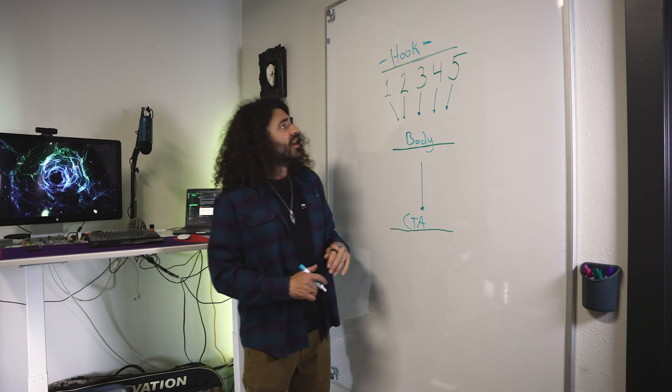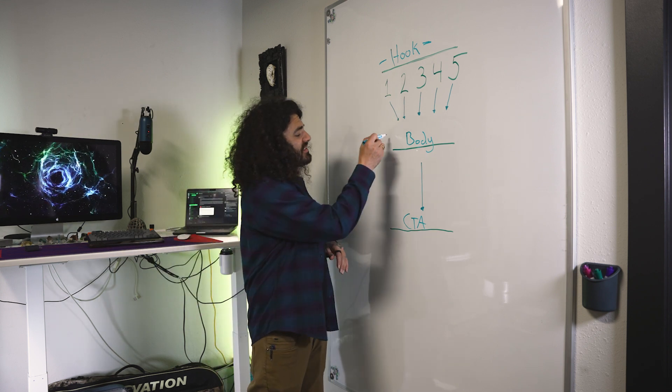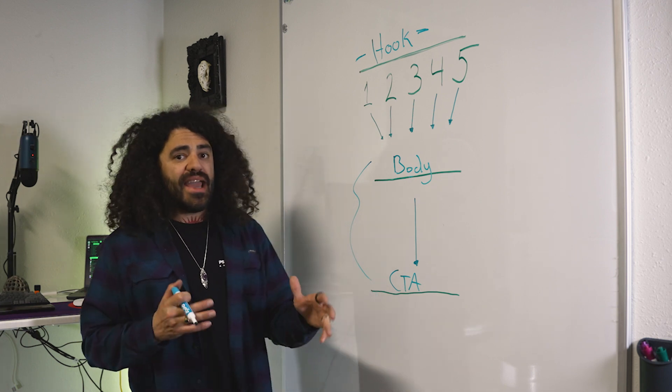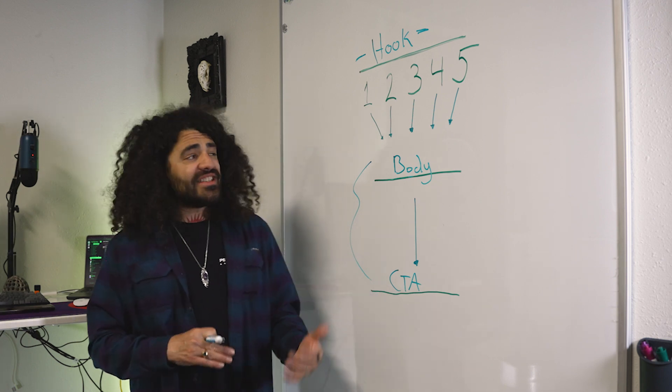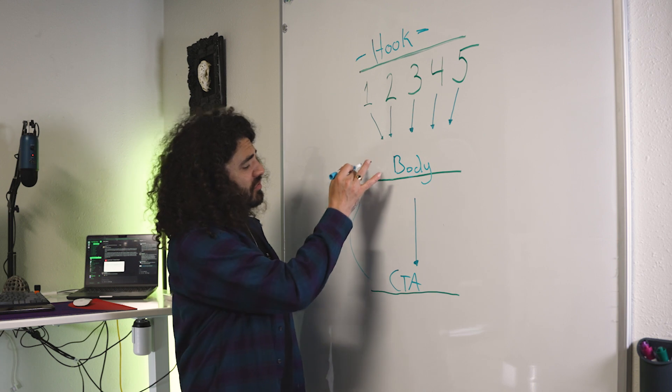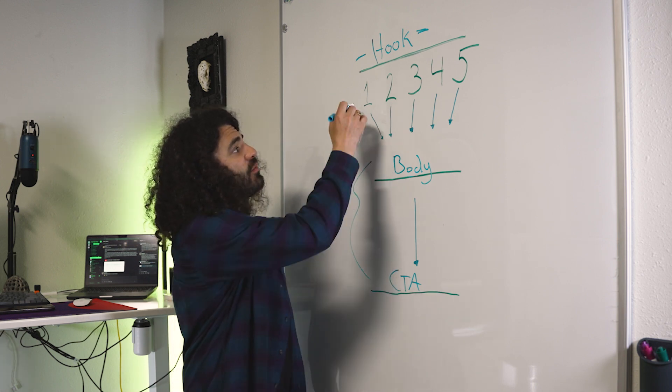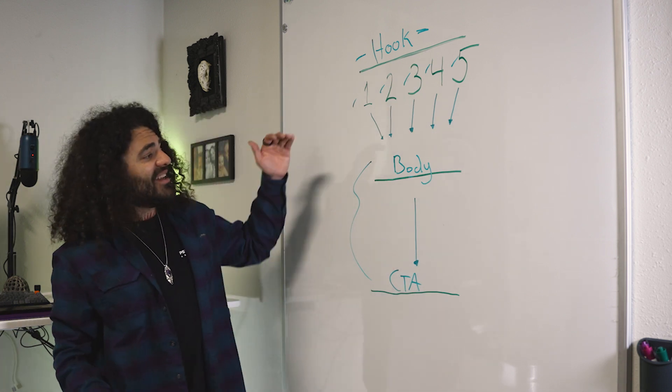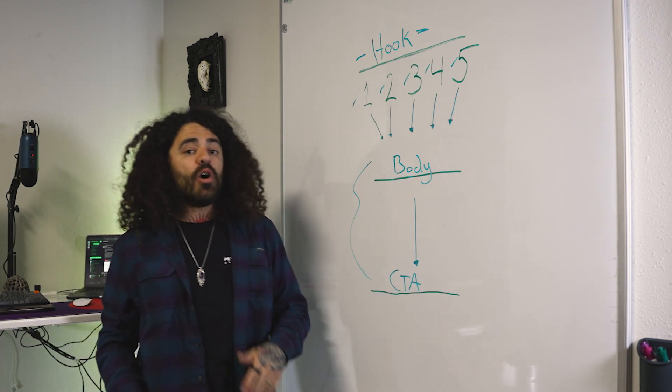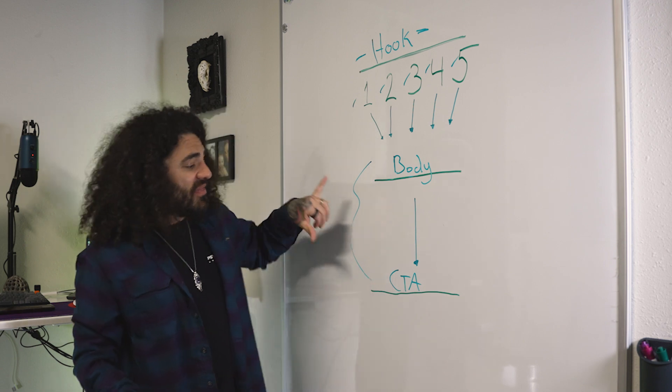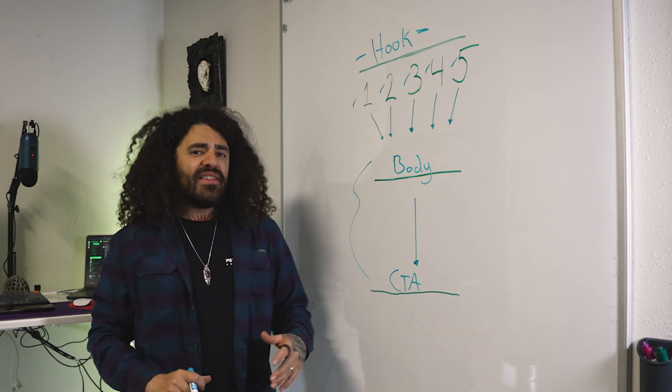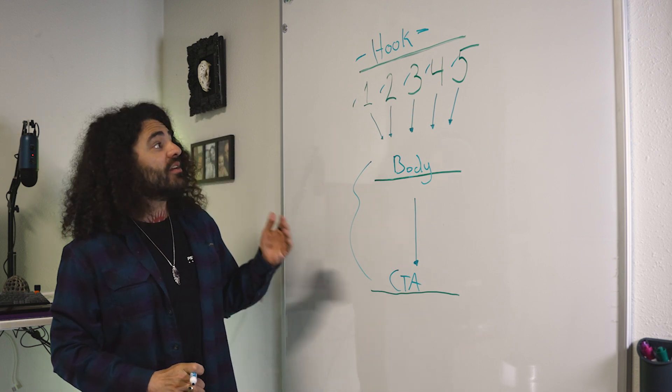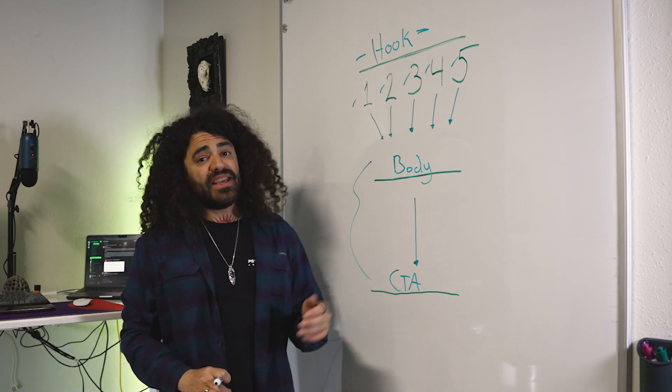There's three components of this. Essentially what we do is the body and the call to action, I usually like to keep the same. And then we'll shoot this in one chunk, and then we'll sit down and shoot hook one, two, three, four, and five. When it comes to editing time, we just bolt those hooks onto the second part of the ad. That's where I like to start when it comes to split testing, because honestly, we have found the hook makes the biggest difference.